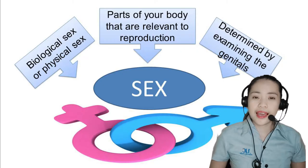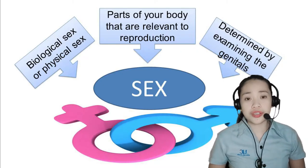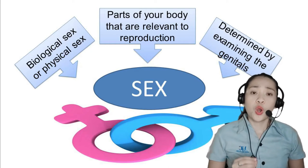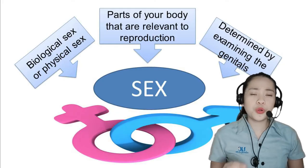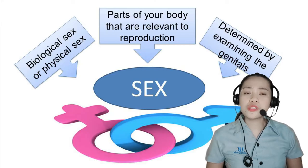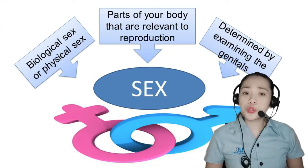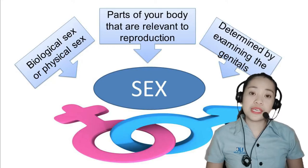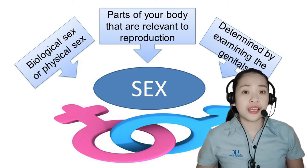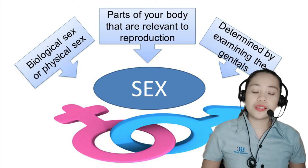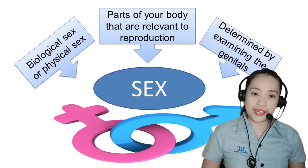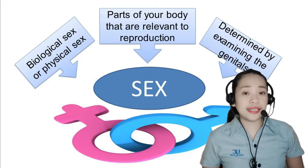Let's start with the word sex. Sex is a biological dimension of your gender and sexuality. It is also referred to as biological sex or physical sex. The term generally pertains to your identity depending on your sexual anatomy and physiology — which means parts of your body that are relevant to reproduction and the functions of these parts. Sex is typically determined by examining your genitals, which are external organs associated with reproduction or the ability to create offspring. Among humans, sex is often assigned at birth.